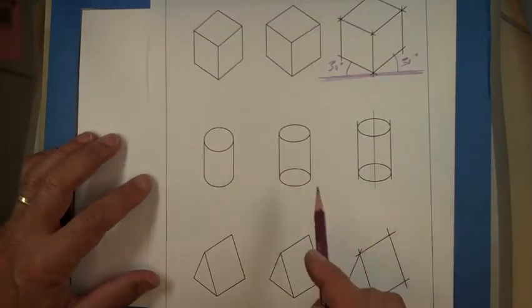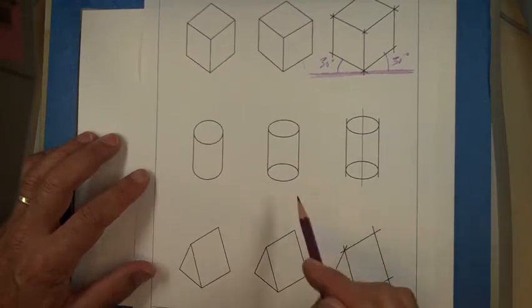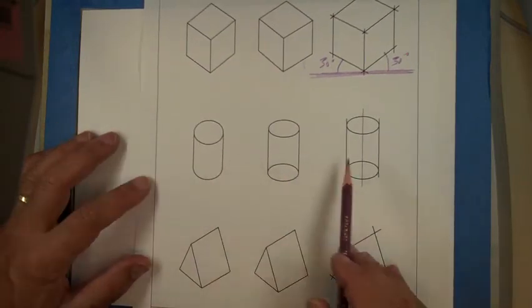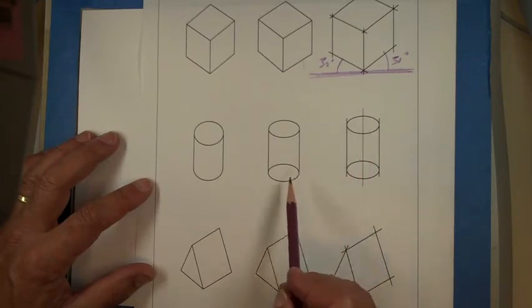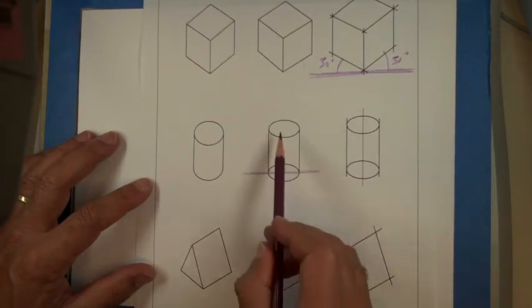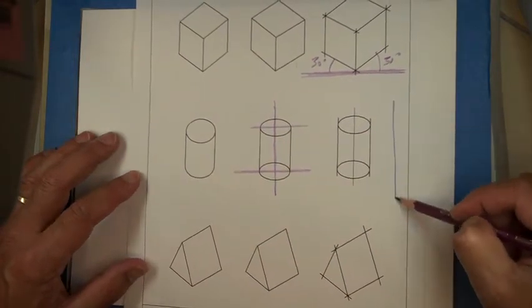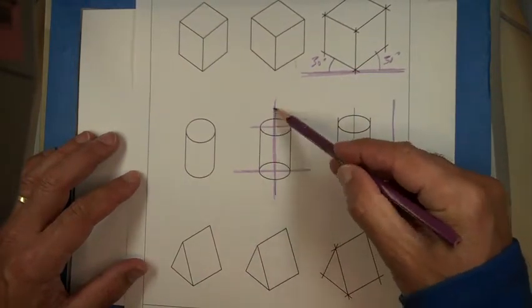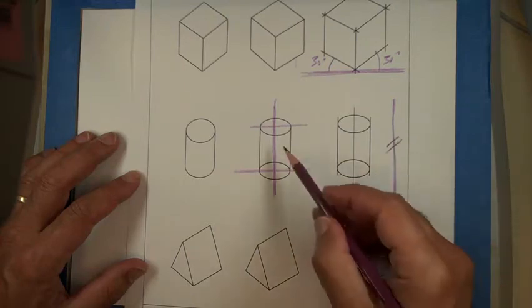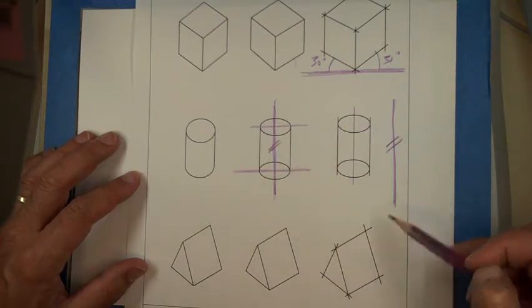For ellipses, once again, if the object is just sitting, well in this case it will be sitting flat on a horizontal surface so your ellipses have to be horizontal. That means that the vertical of your object has to be parallel to the vertical of your drawing paper.